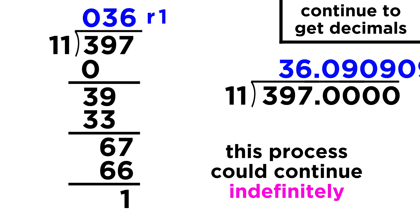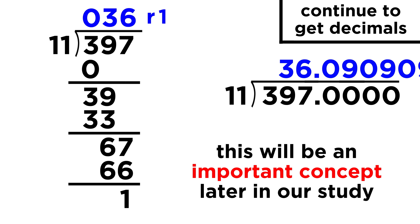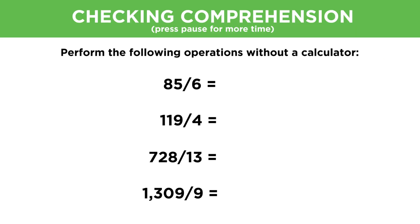We would soon find out that this process could go on forever, giving alternating zeros and nines forever, and this is our first introduction to repeating decimals, which will come back later when we look at the difference between rational and irrational numbers. For now, let's check comprehension.